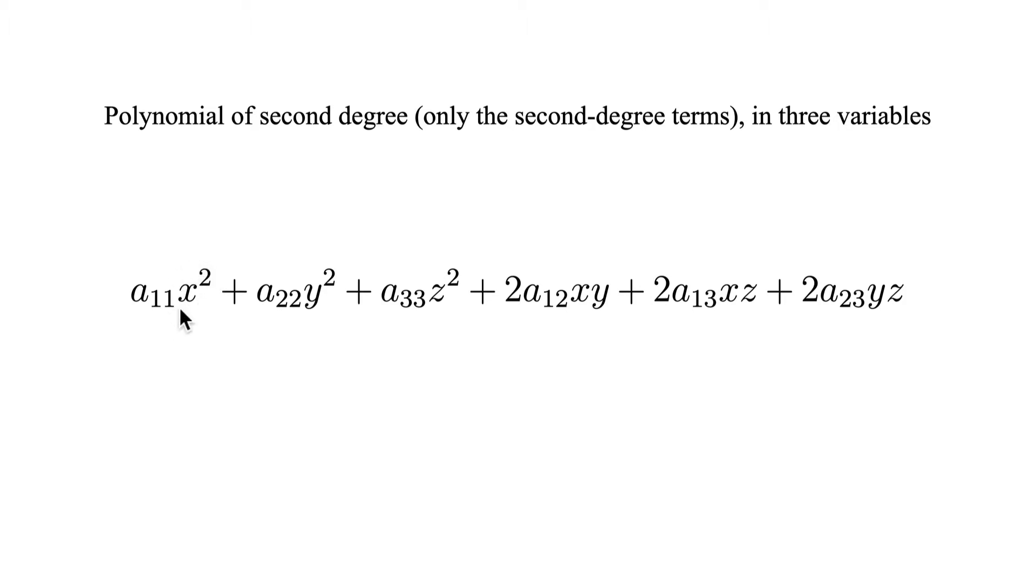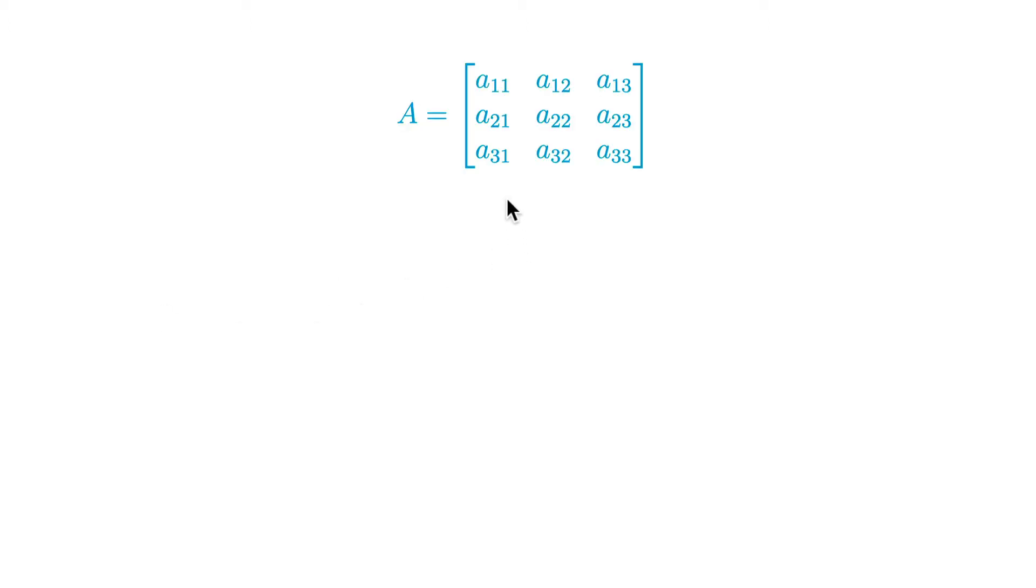Here we multiply the same variable with itself, so it is x times x, and here is x times y, but both are seen as a second degree operation. All those a numbers are just coefficients. You know that this indexing of the coefficients comes from the fact that we usually store them in a matrix.